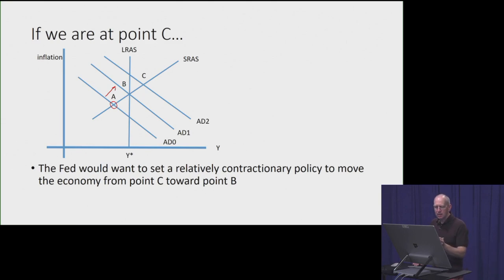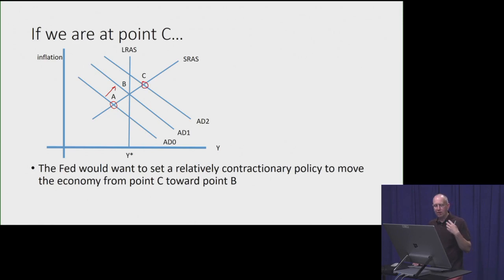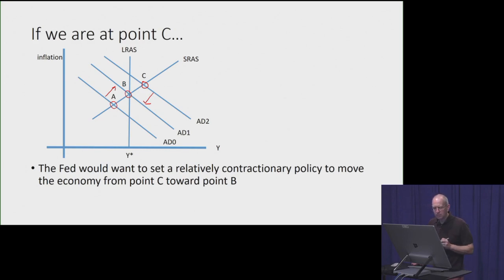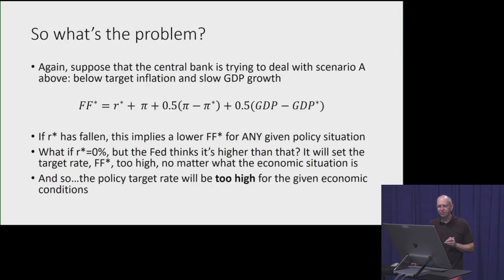If we're starting at point A, we want to pursue a relatively expansionary policy to push the economy up toward point B. Likewise, if we happen to be at point C — the economy is overheating, GDP growth or aggregate demand is too high, inflation is too high — you'd want to pursue a relatively contractionary policy, or a relatively higher federal funds rate, to push the economy back toward a sustainable level. That sustainable level is given by Scenario B.